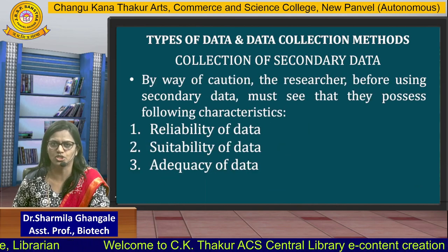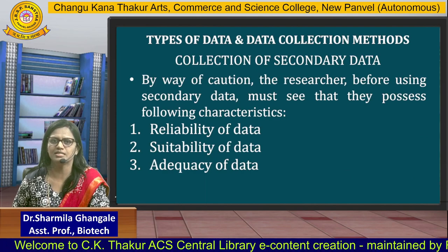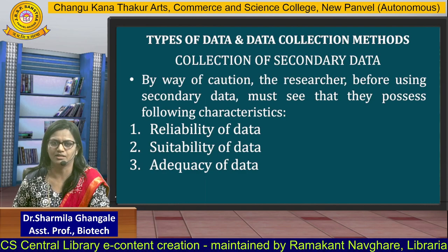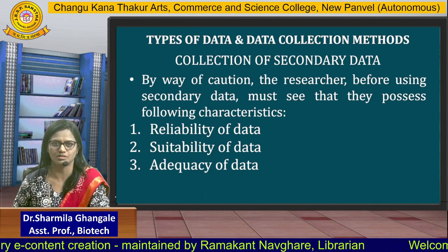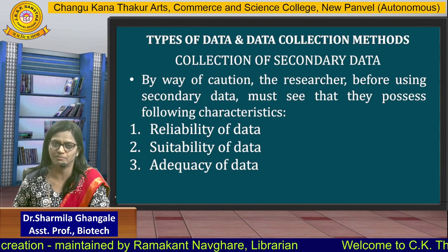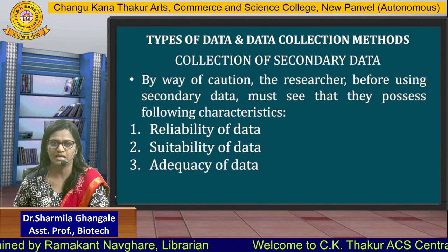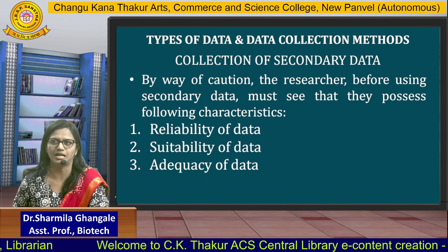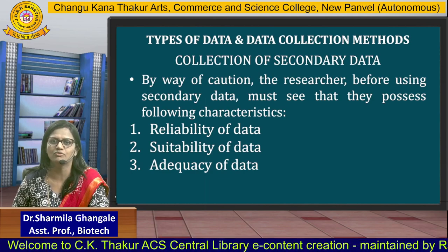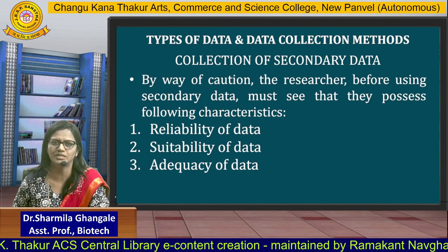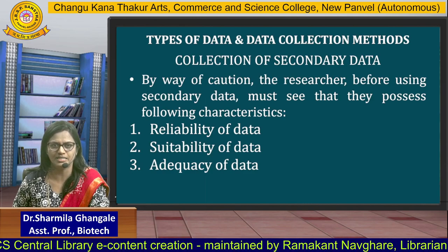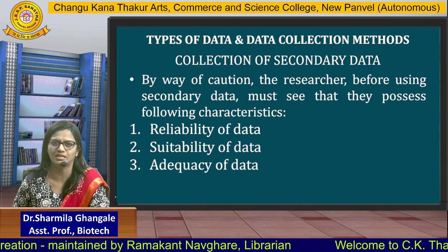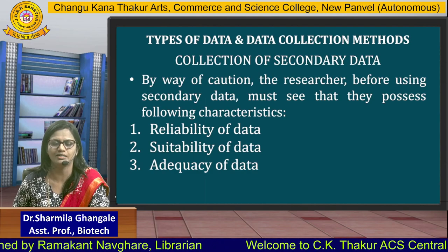Before using secondary data, the researcher must ensure that the data possesses three key qualities: reliability of data, suitability of data, and adequacy of data. The data should be reliable — only then should it be used for research work. Suitability means the data should be relevant to your research question. Adequacy means you should not take data which is not adequate for your research work. These three things — reliability, suitability, and adequacy — must be taken care of when collecting secondary data.